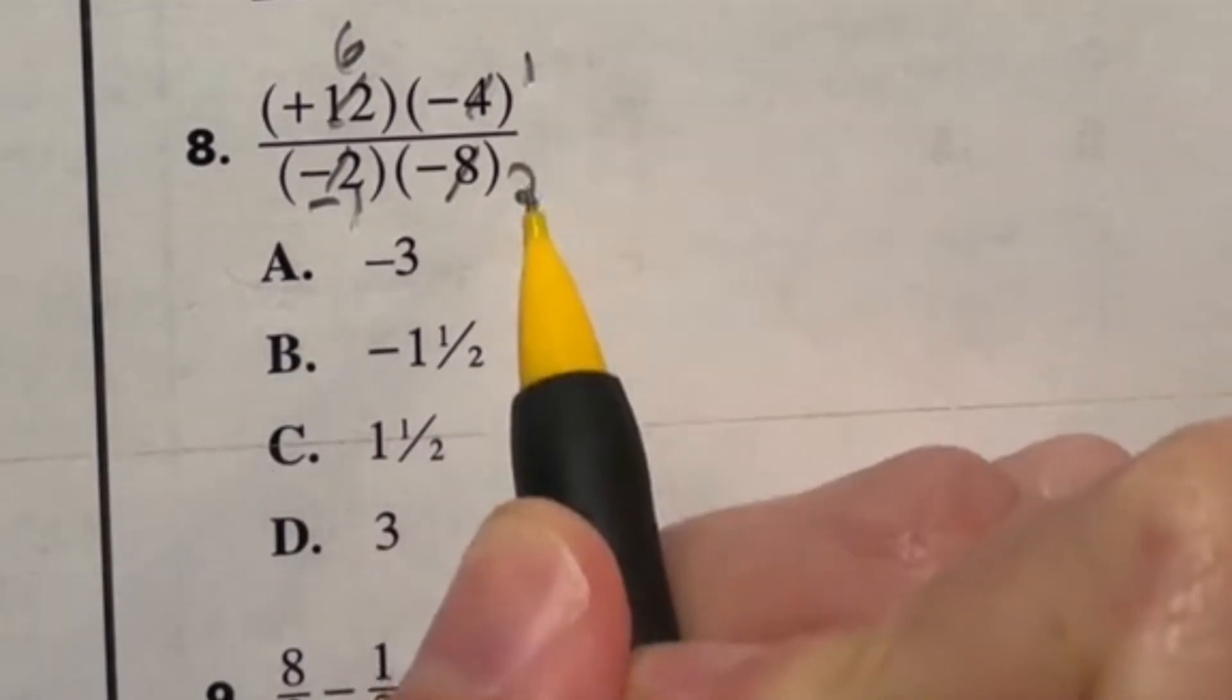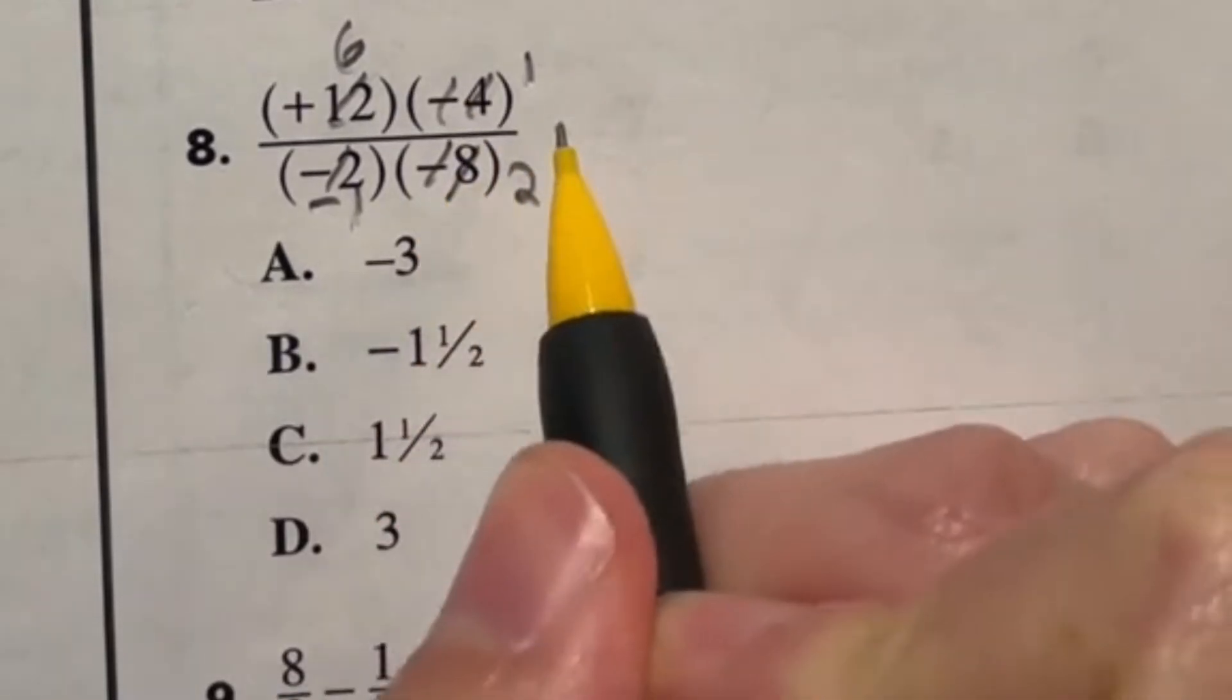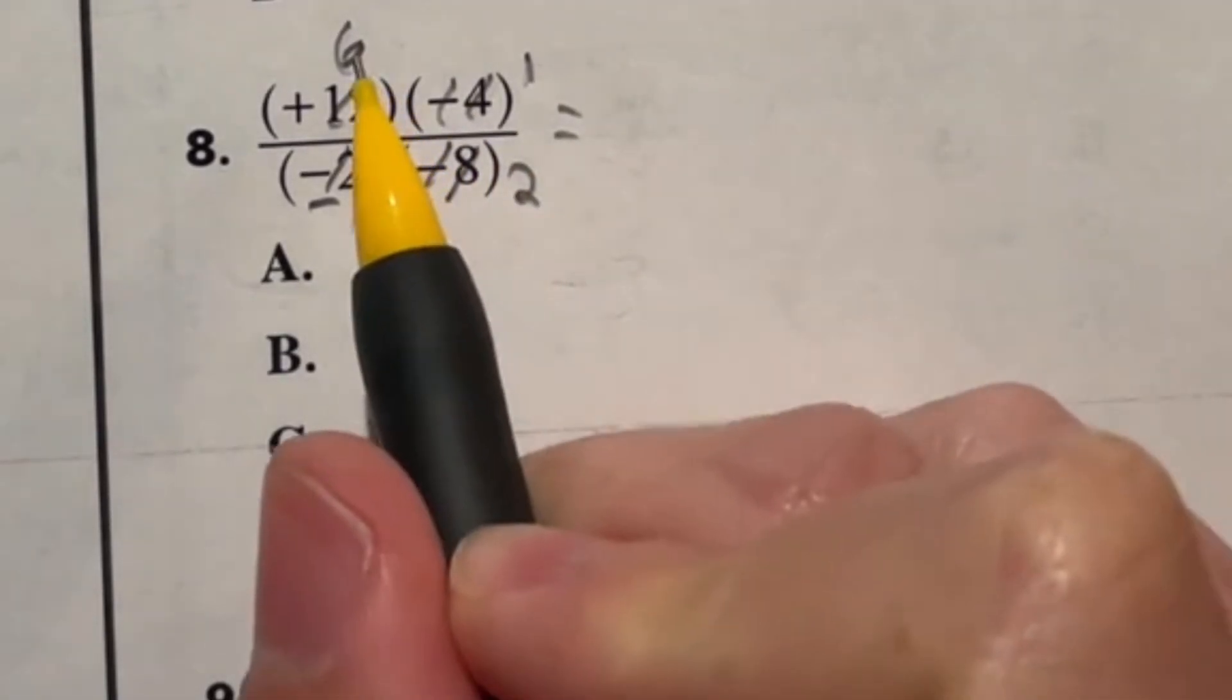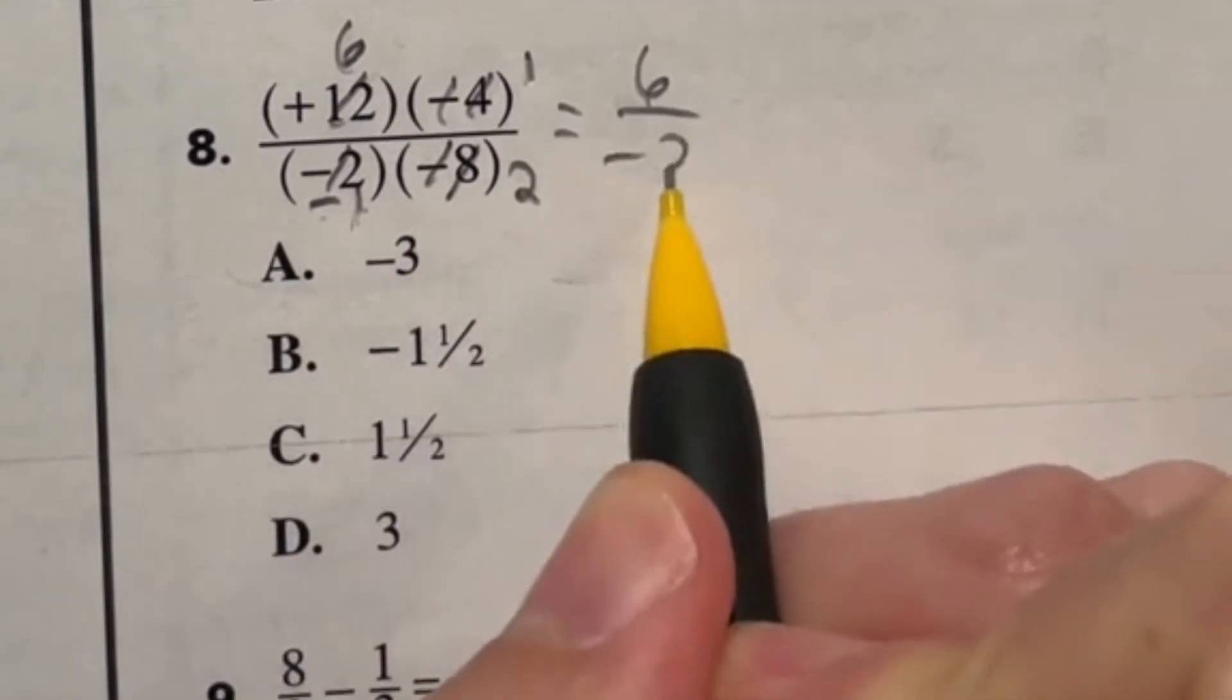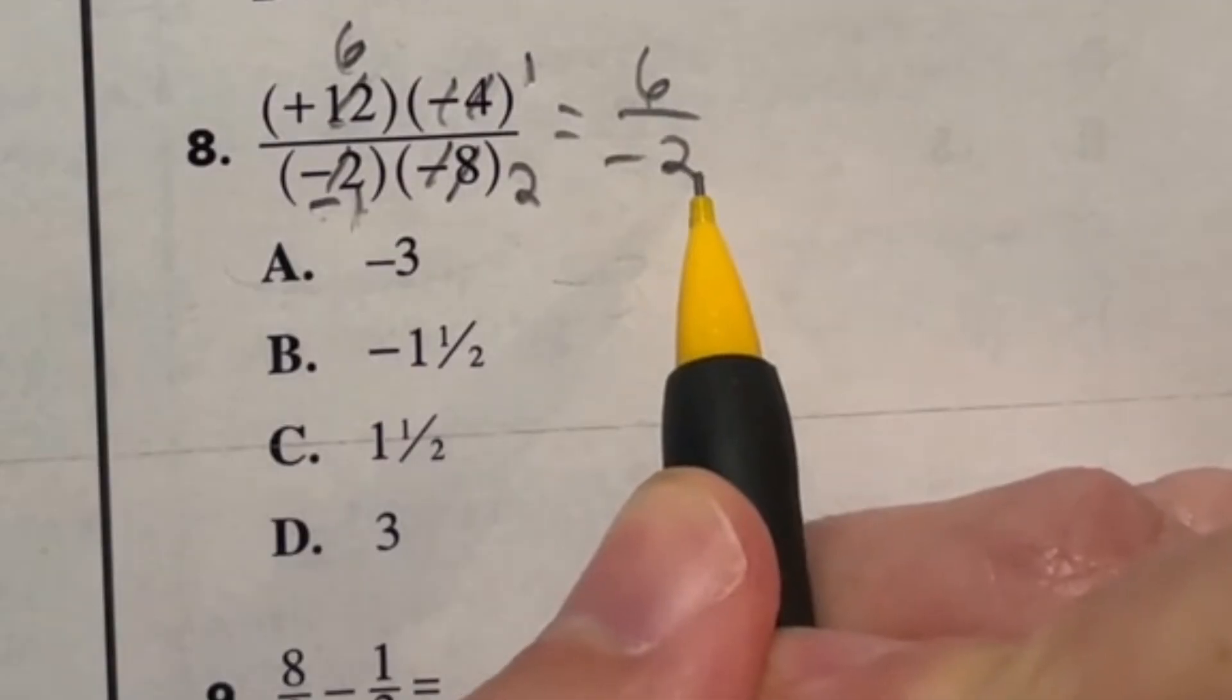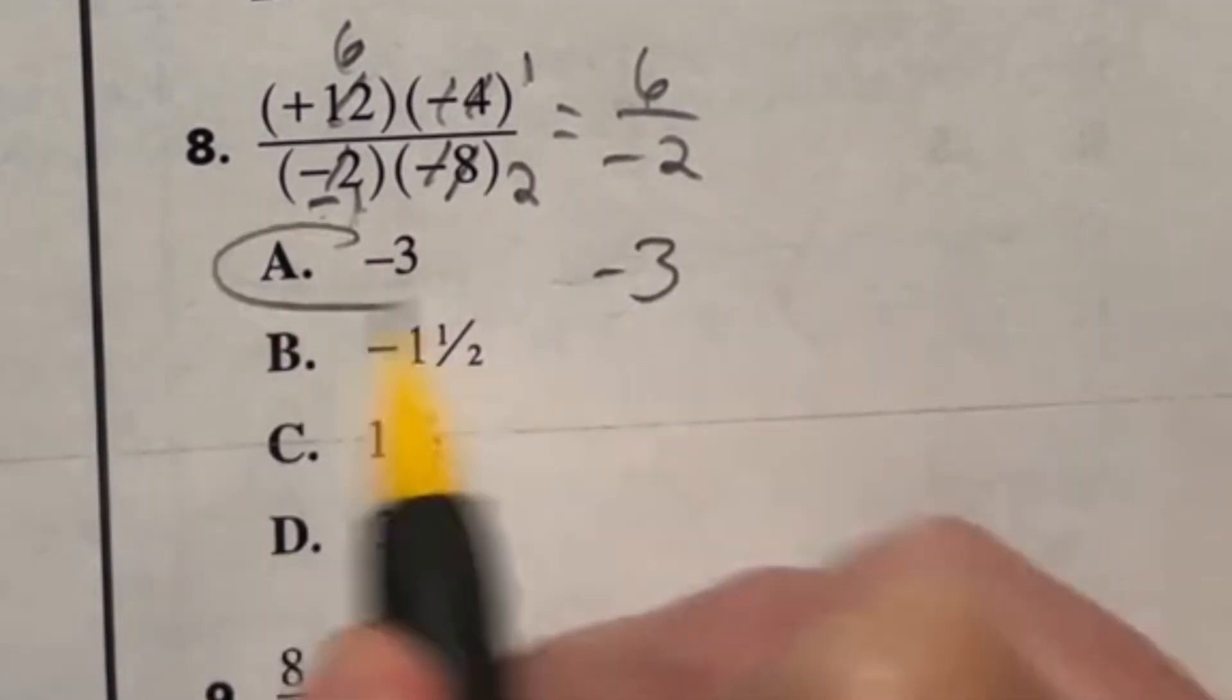The negatives also can be canceled out. So we got six over negative two. Well, six divided by negative two is going to be negative three. Our final answer is A.